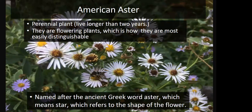The American aster itself — as I was doing some research on it — I learned that it's a perennial plant, which means that it lives longer than two years. They are flowering plants. That's how you most easily distinguish them, because of their pattern. They kind of look like a star, which relates to the name aster, which is the shape of the flower.